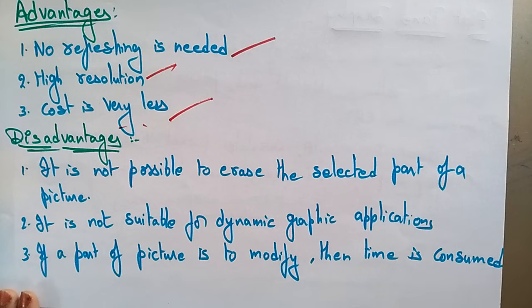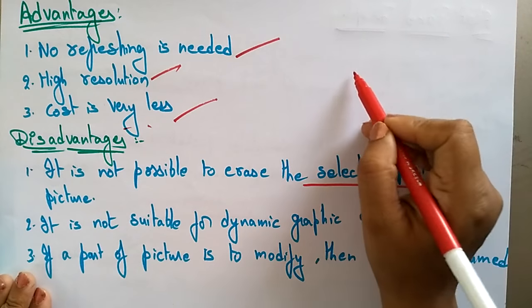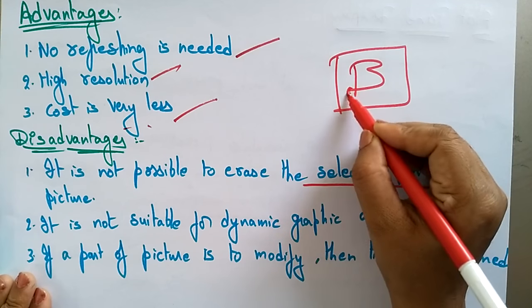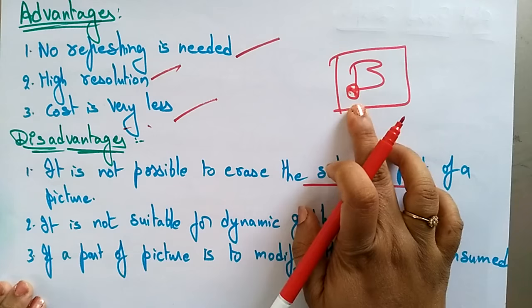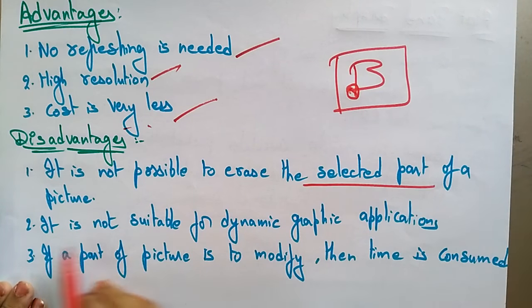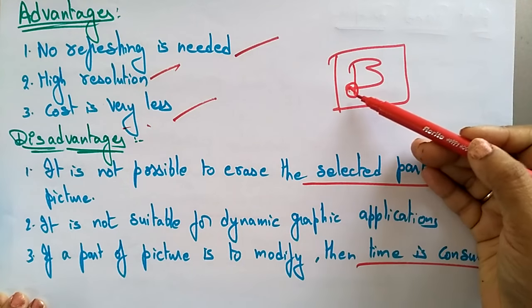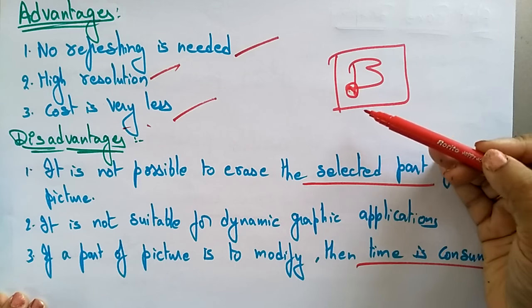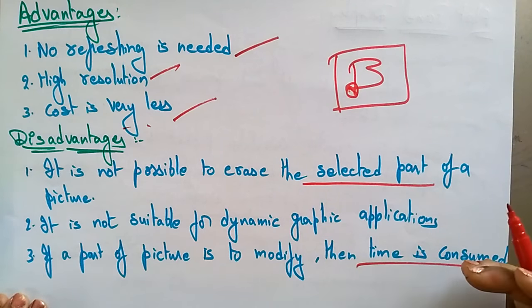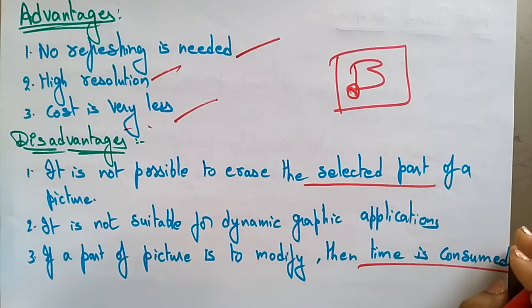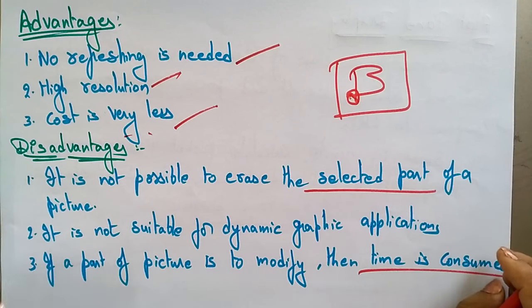The disadvantages of DVST are: it is not possible to erase a selected part of the picture. If you want to erase some part of what is displayed on screen, that is not possible in DVST. It is not suitable for dynamic graphic applications. Also, if a part of the picture needs to be modified, a lot of time is consumed. Thank you.